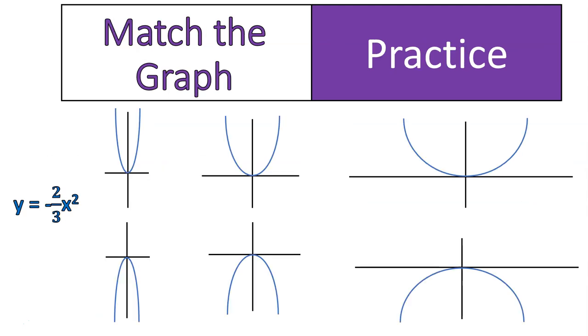I've got an equation over there. y equals negative 2 thirds x squared. I want you to look at these six different graphs and tell me which one would match up to y equals negative 2 thirds x squared. And this is a very approximate graph. It's just to get us kind of practicing and thinking about it.